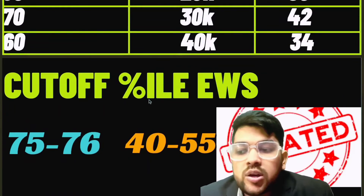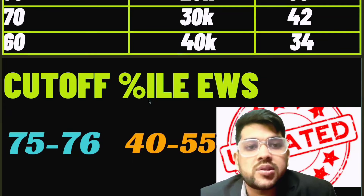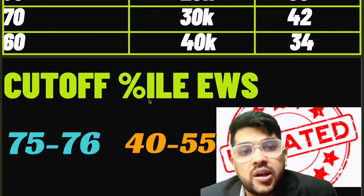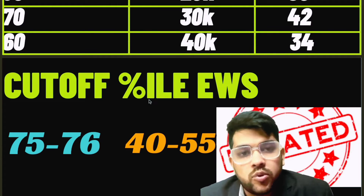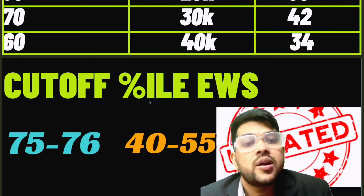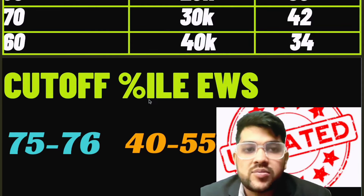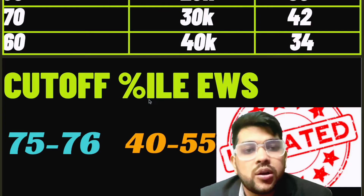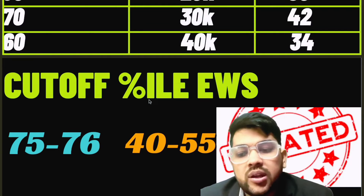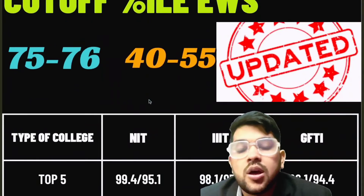For EWS, the cutoff percentile for this year to be eligible for JEE Advanced will be around 75 to 76. The marks requirement will be 40 to 55 depending on the type of paper — 40 marks for a hard paper, 55 for an easy paper, and around 47–48 marks for a moderate paper.